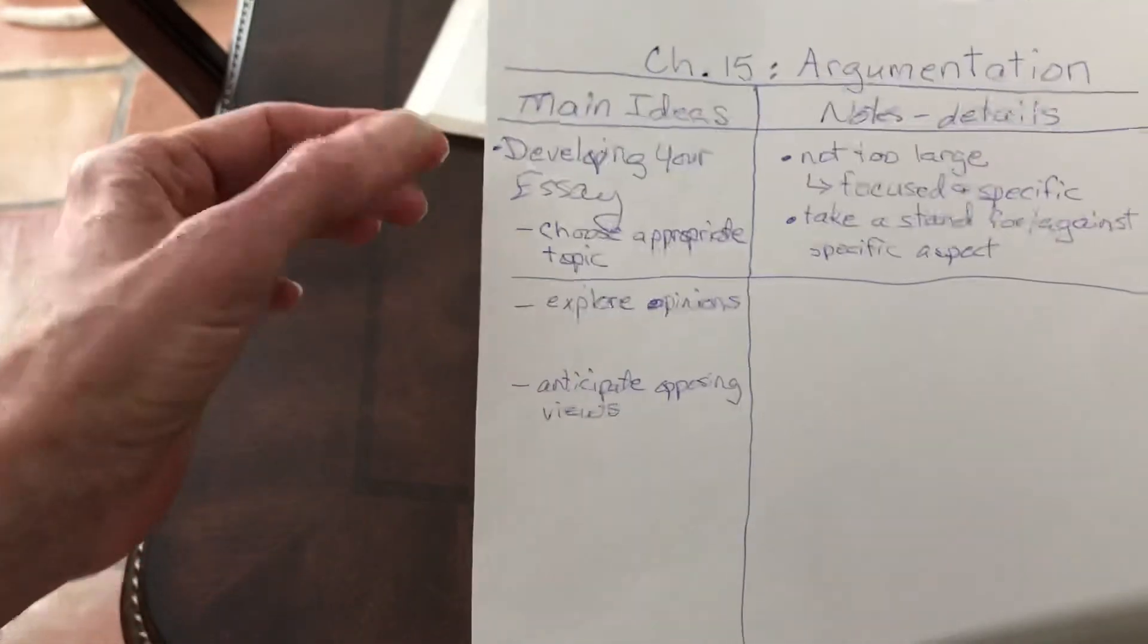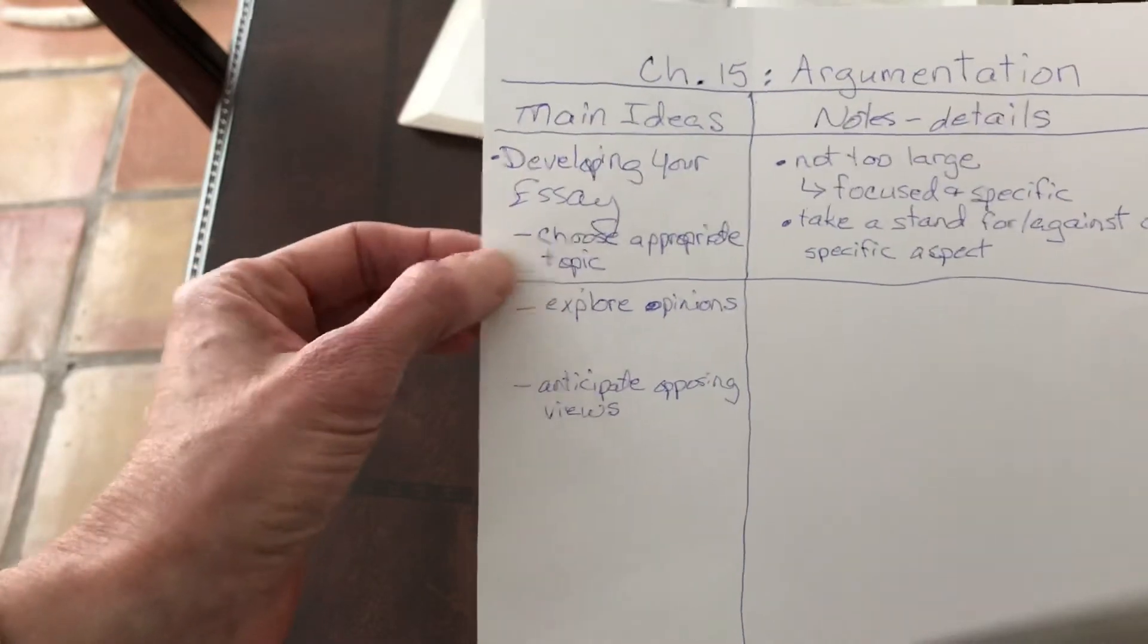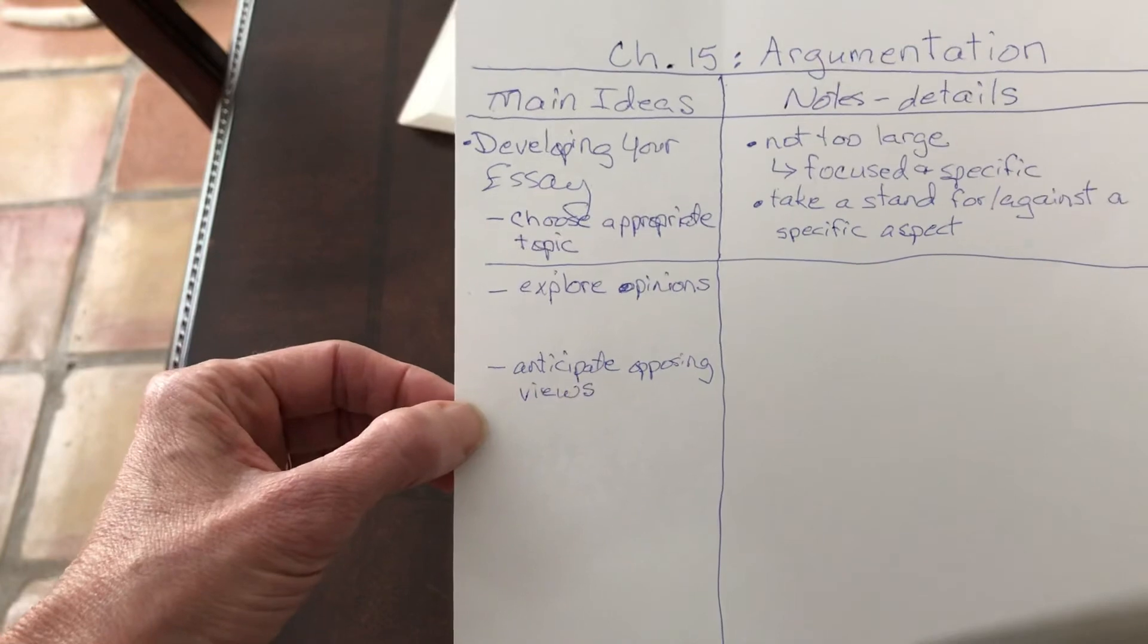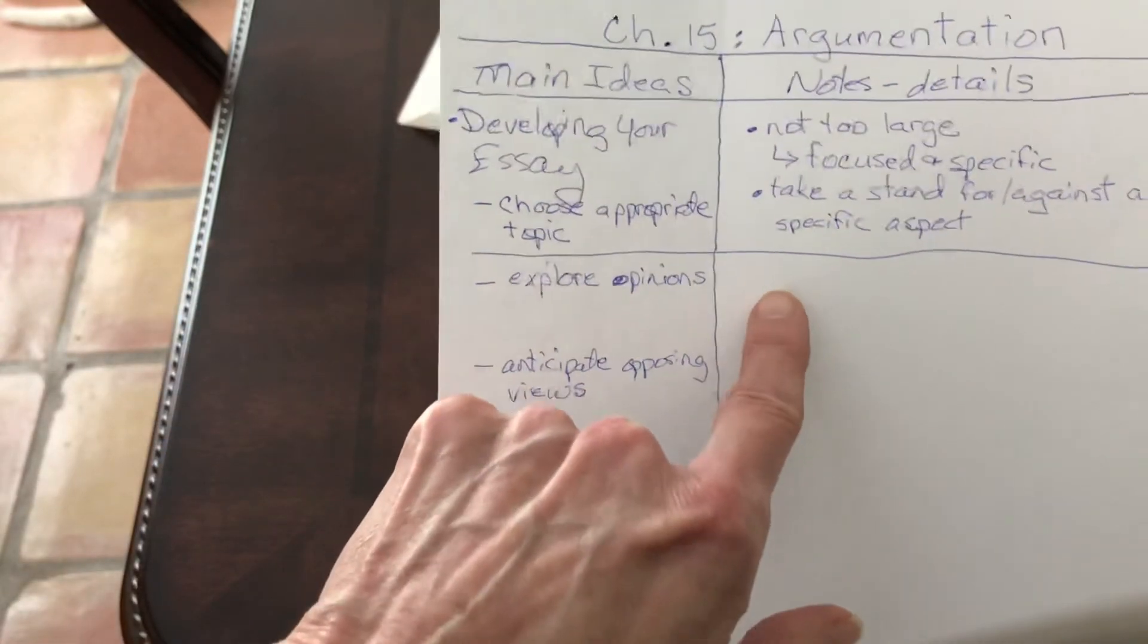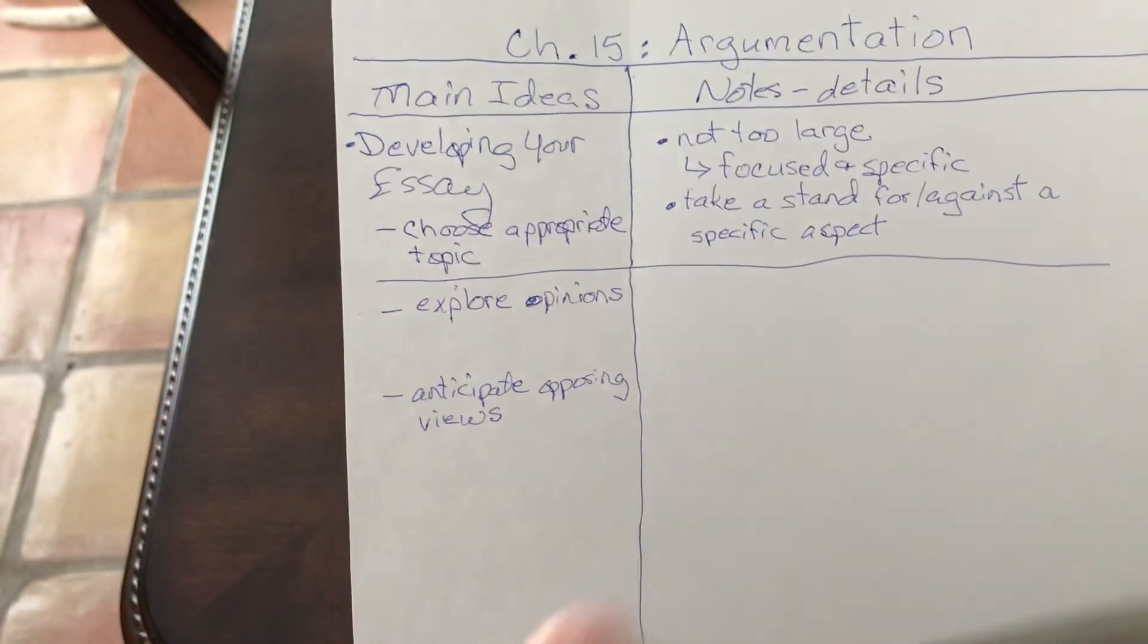You can still tell that they all go together because I've got bullets for these and dashes separating the subheadings. So when I add the details for exploring my opinions, I'll just divide that by a line as well.